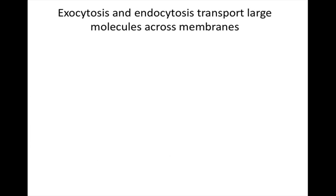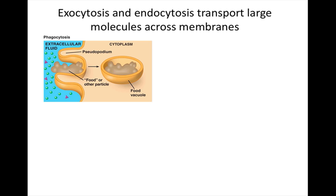Before we discussed the transport of small substances across the cell membrane. Now let's discuss the transport of bulk materials. A cell uses the process of exocytosis to export large materials such as proteins or polysaccharides. Now let's talk about endocytosis — the opposite process — in which a cell takes in substances. A depression in the plasma membrane pinches in and forms a vesicle, enclosing material that had been outside the cell.